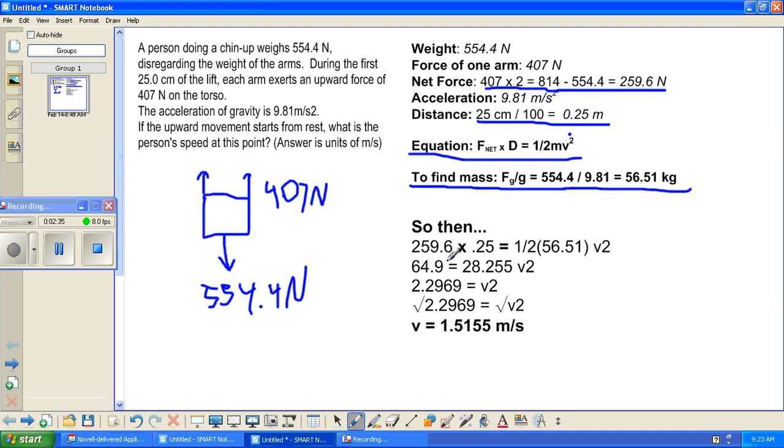259.6 times 0.25 meters is 64.9, and one-half of 56.51 is 28.255 times v squared. We divide 64.9 by 28.25, and we get 2.2969 velocity squared. We take the square root of 2.2969, and we get velocity equals 1.5155 meters per second.